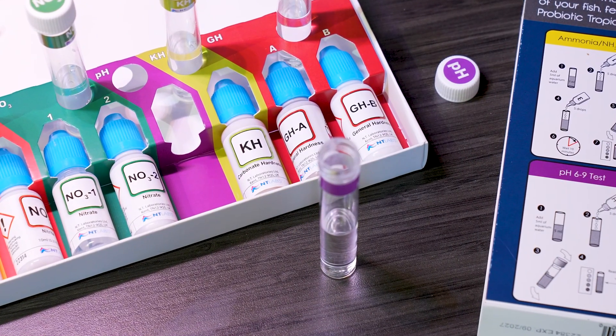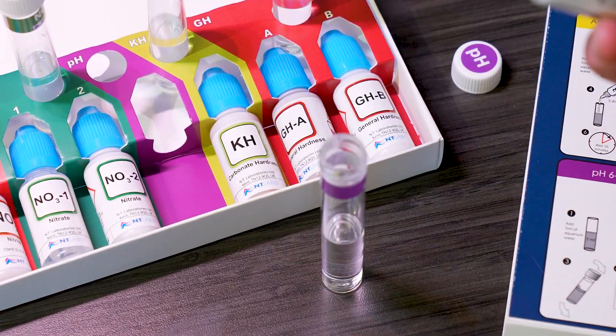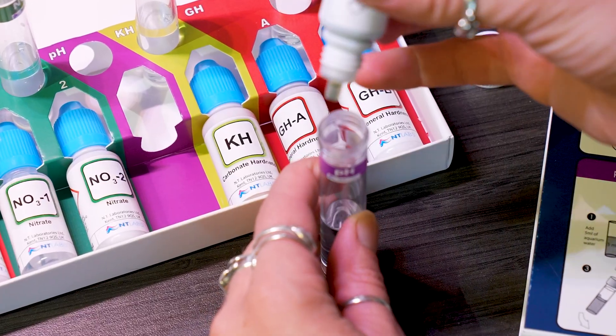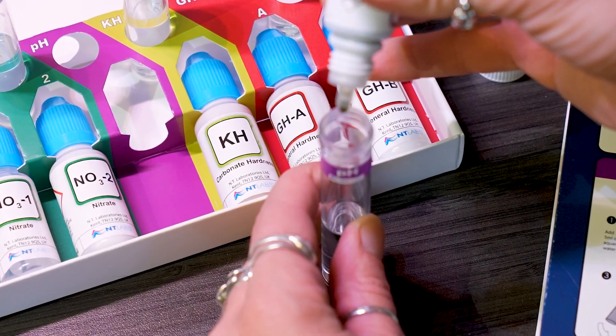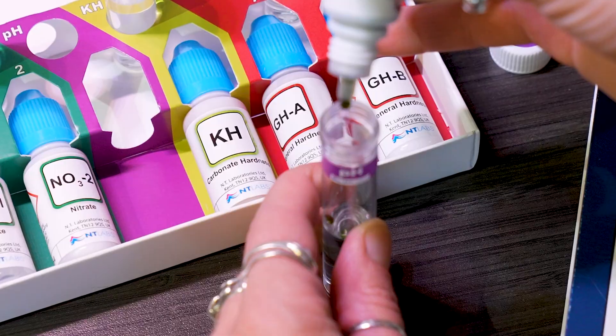pH is on a scale of 0 to 14. Very acidic water has a pH of 0, and very alkaline water has a pH of 14. You generally would like to stay neutral and say between seven-ish.